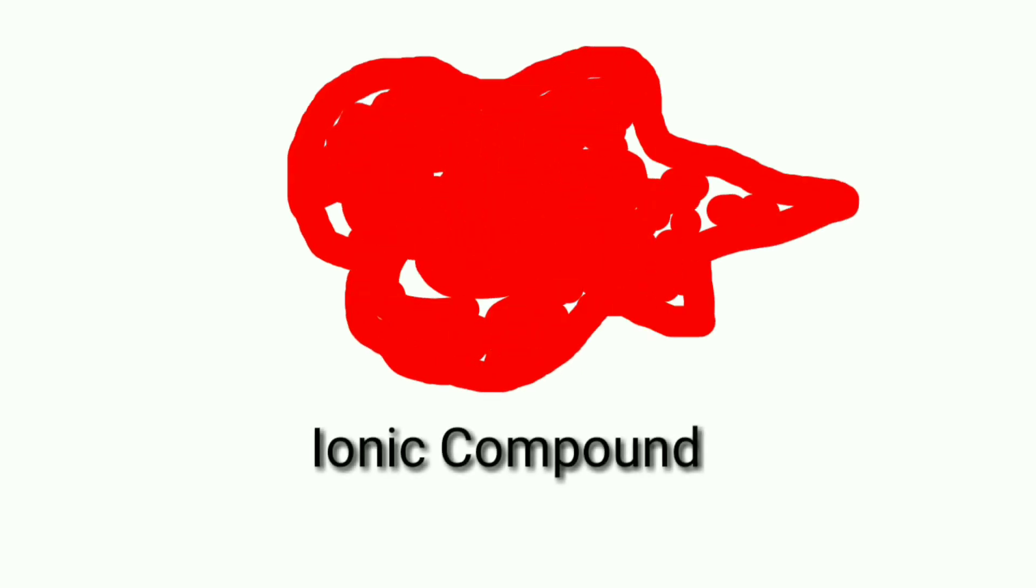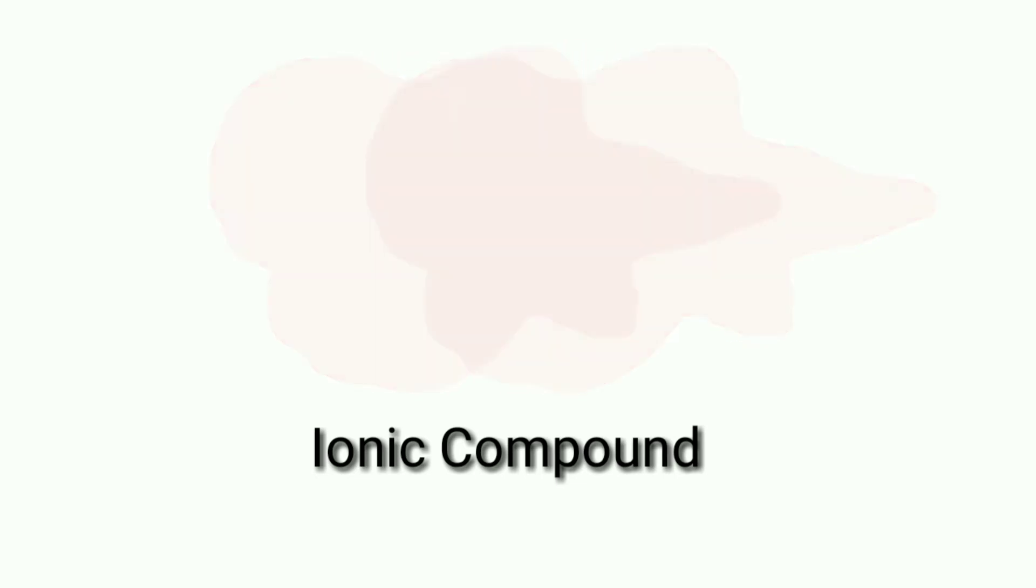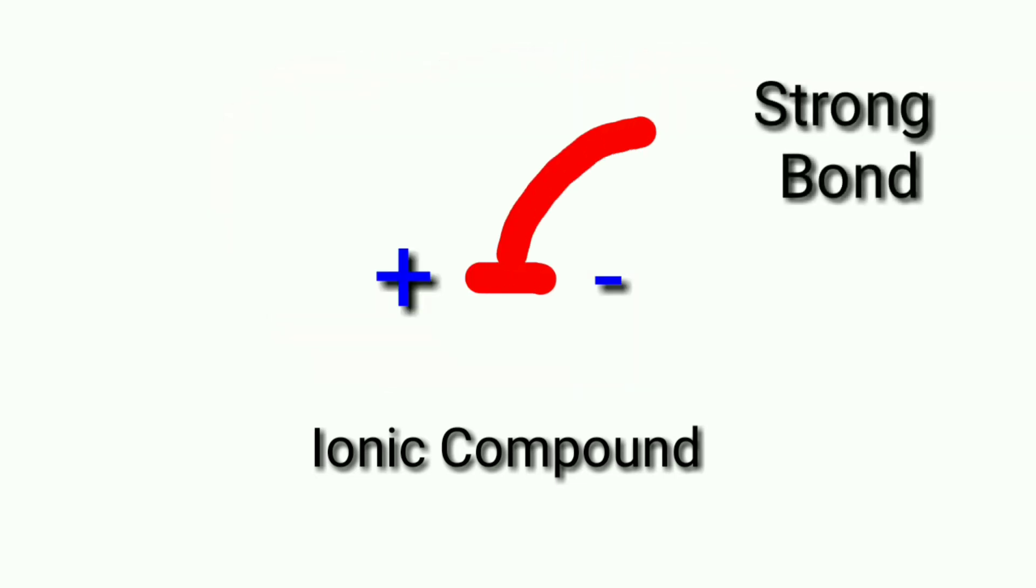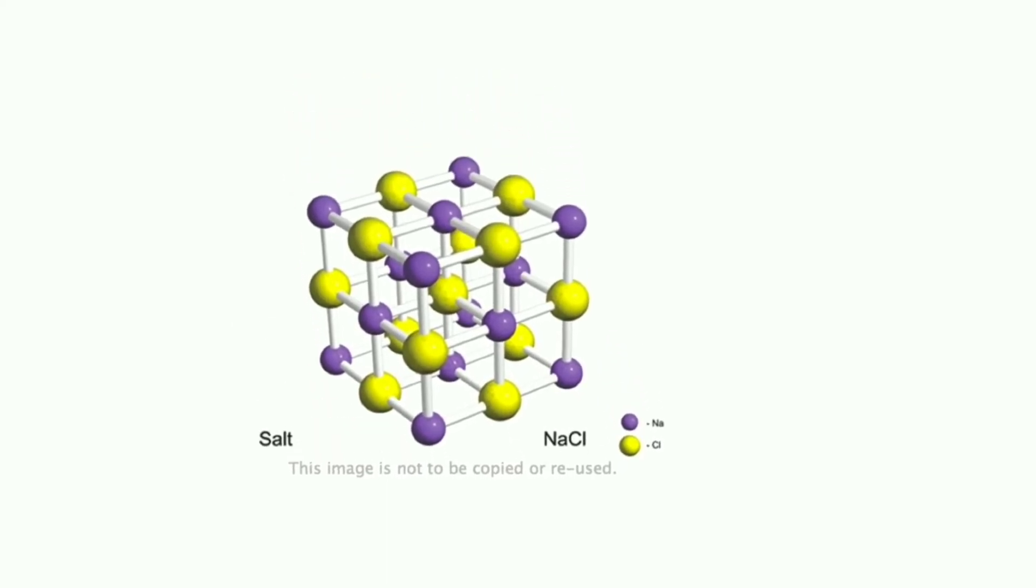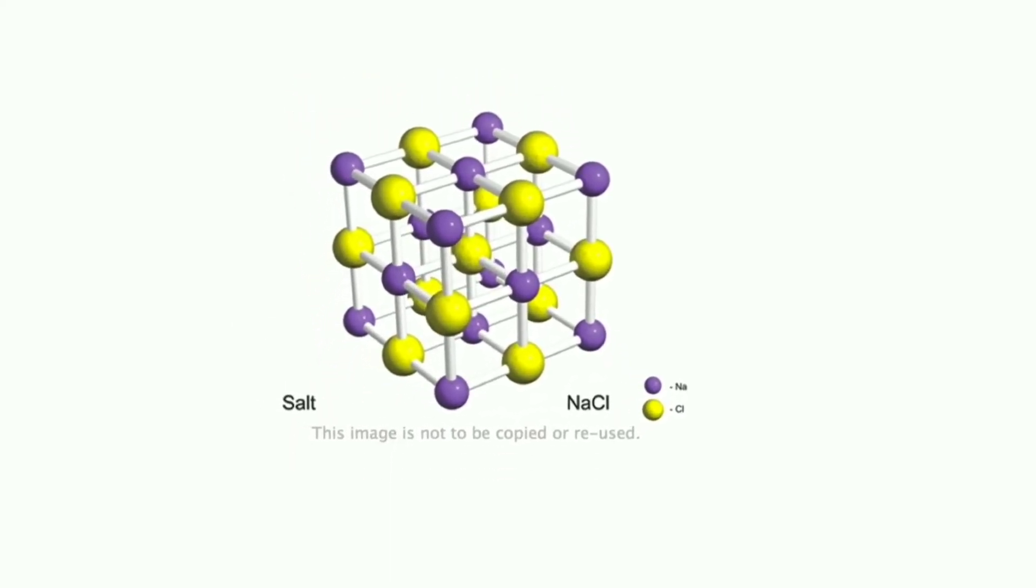There is no doubt that ionic compounds are brittle. There are strong bonds between their ions, but why are they brittle? Let's take an example of sodium chloride ionic compound. This ionic compound's structure is like that if we see the structure.